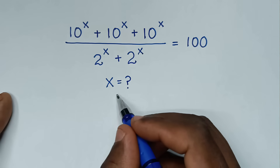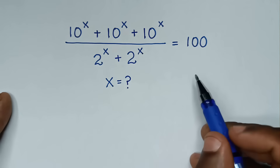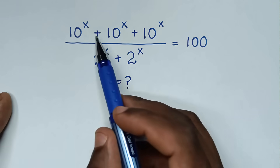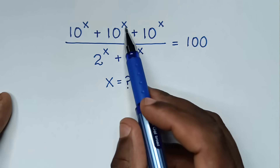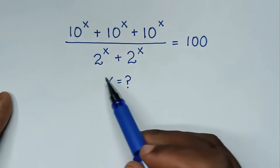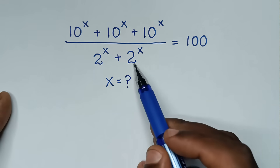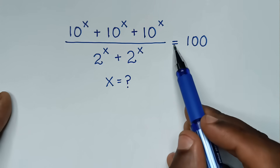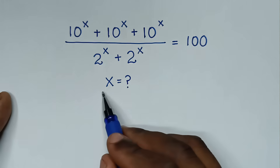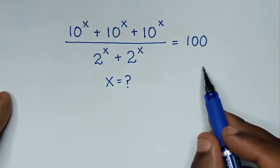Hello, you are welcome to solve this math problem, which is 10 power x plus 10 power x plus 10 power x over 2 power x plus 2 power x is equal to 100. We need to find the value of x from this equation.